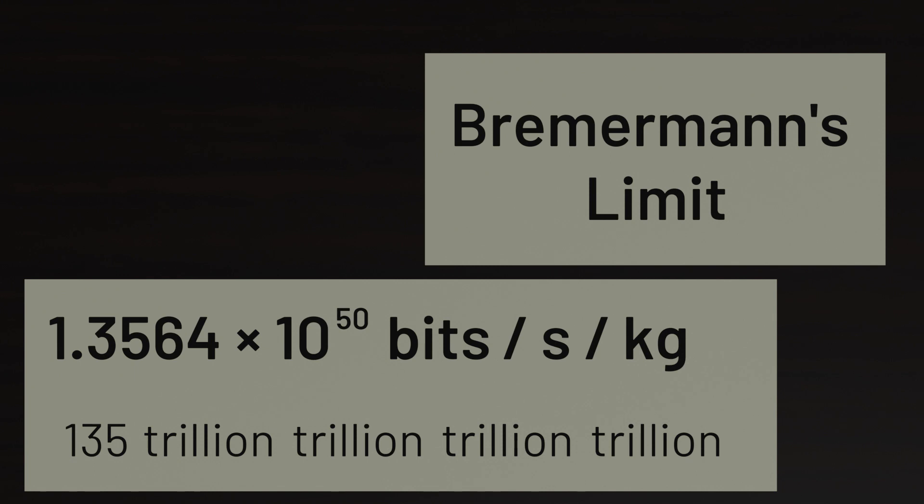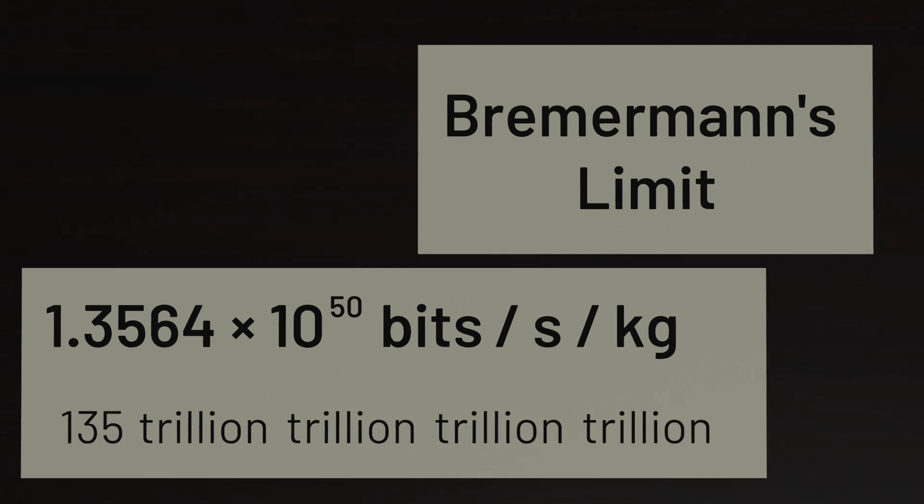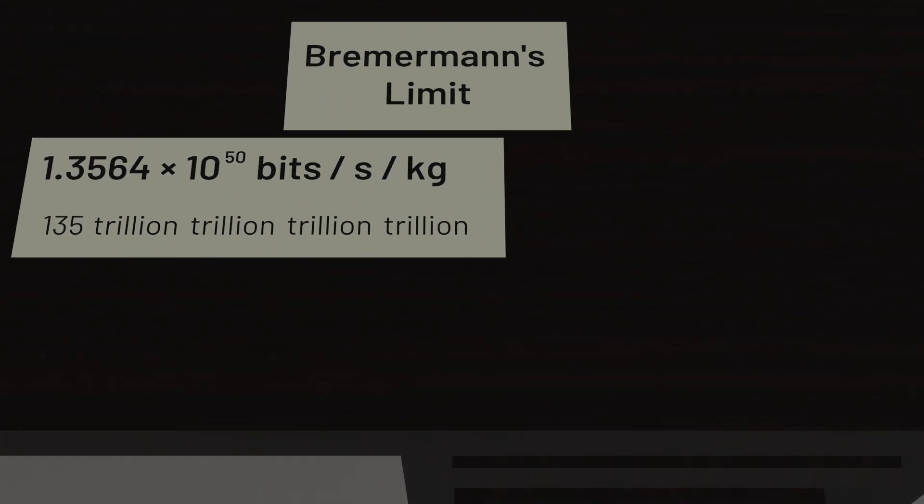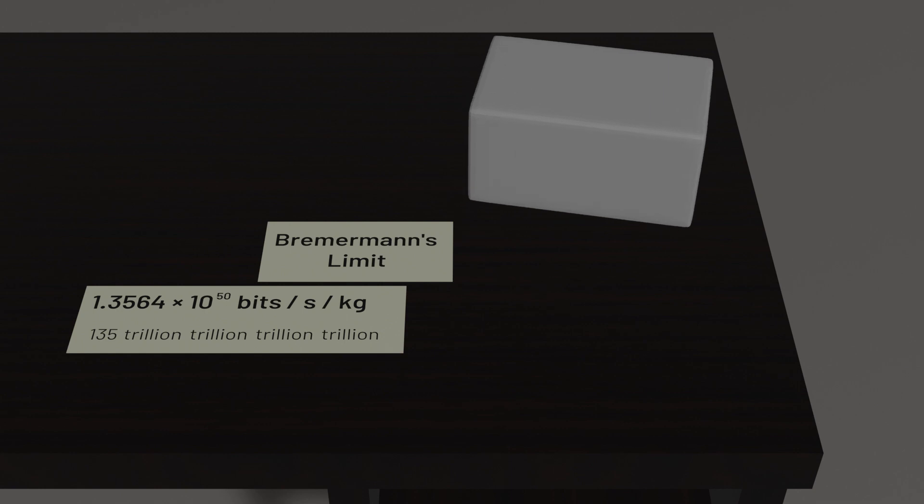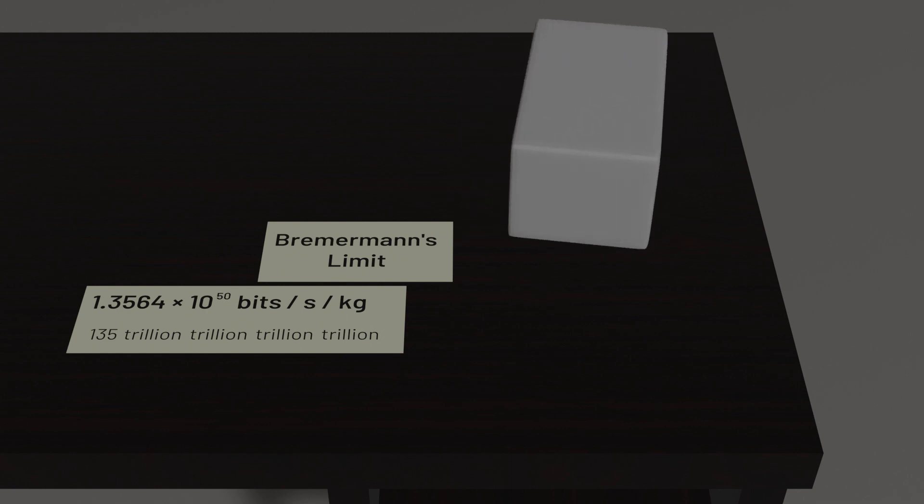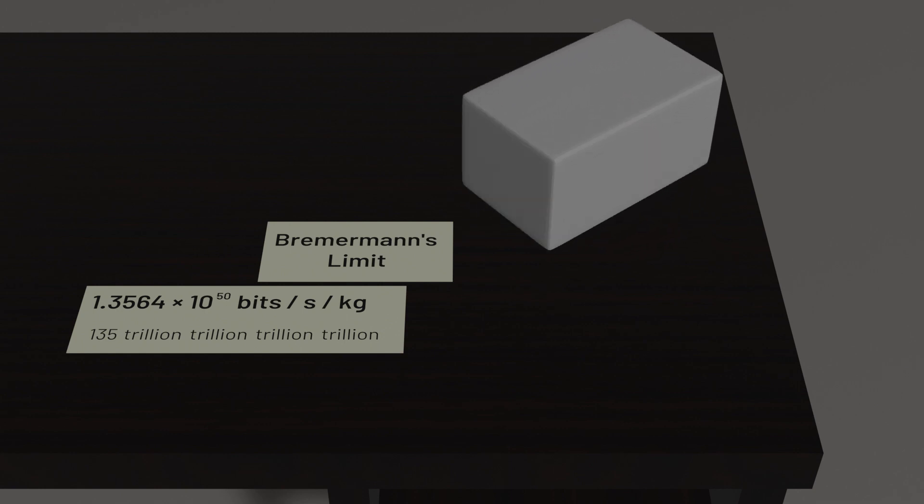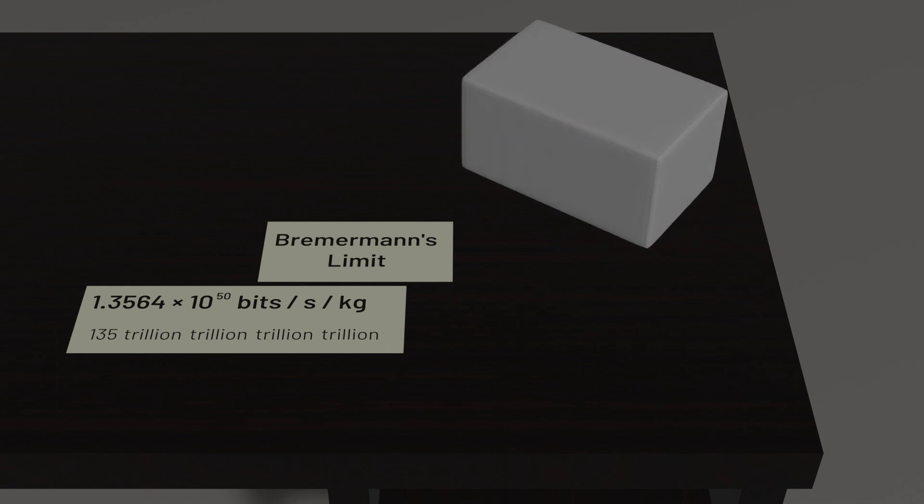But where does that limit come from? The answer is that it comes from the laws of physics. Let's imagine that we wanted to build an optimally efficient computer, a computer that maximizes the use of its resources so that it's as efficient as possible. That computer would need to have some mass. And in an optimally efficient computer, every gram of that mass would be devoted to performing as much computation as possible.